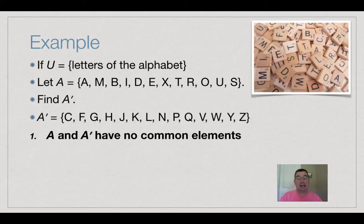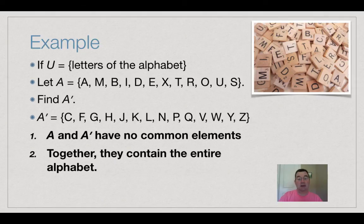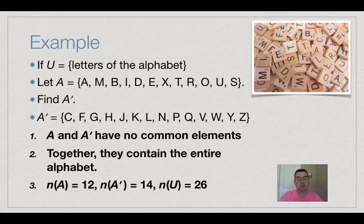So as you can see A and A' have no common elements and together they contain the entire alphabet. So as a union you would get every single letter of the alphabet with no repeats by combining those two sets.